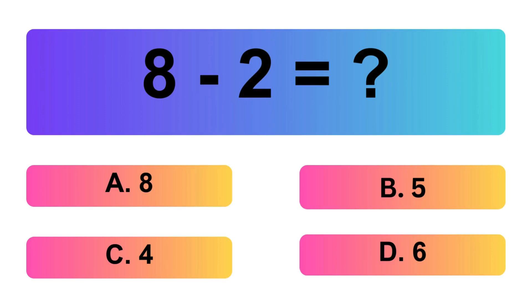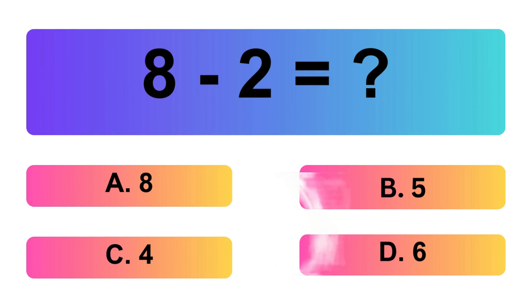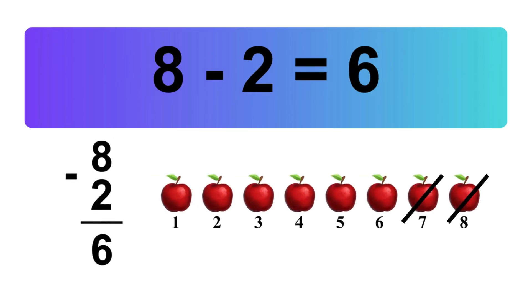8 minus 2 is equal what? Let's count it: 1, 2, 3, 4, 5, 6. So, the answer is 8 minus 2 is 6.